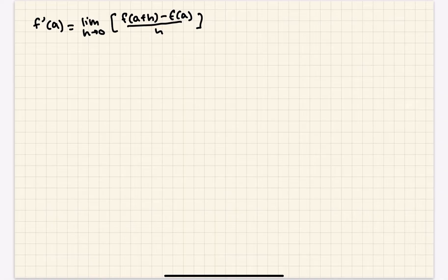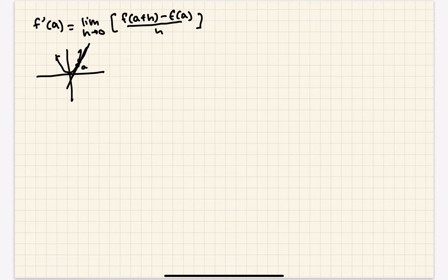What this basically says is: you take a point on, let's say, a quadratic function — you take a point a, you take a very small value h above it (because h approaches 0), and you find the slope of the secant line. Then you take the limit as h approaches 0, and as h approaches 0, it becomes a tangent line — it just intersects the function at x = a instead of being a secant line. More often than not, this limit will end up being 0 over 0, but there are manipulations you can do to get an actual value from it.